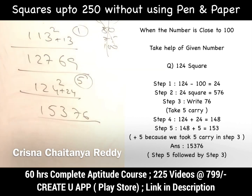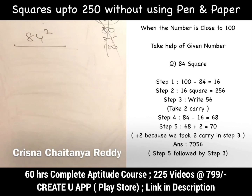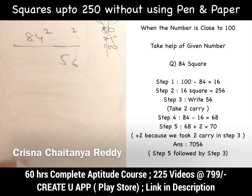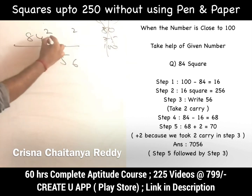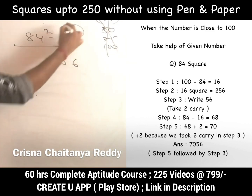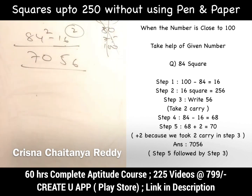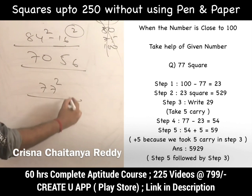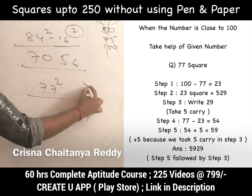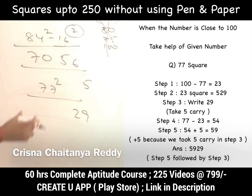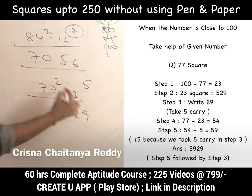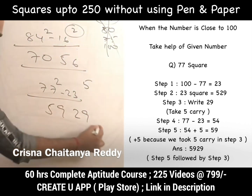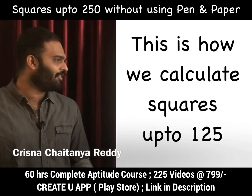For 84²: it is 16 less than 100. 16² = 256; write 56 with carry +2. 84 − 16 = 68, plus 2 = 70. Answer is 7056. For 77²: it is 23 less than 100. 23² = 529; write 29 with carry +5. 77 − 23 = 54, plus 5 = 59. Answer is 5929.